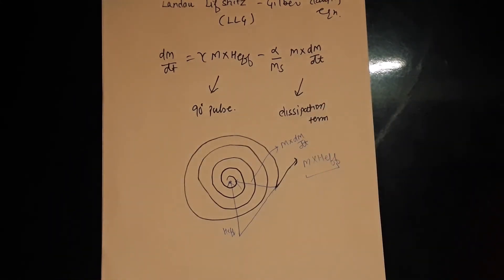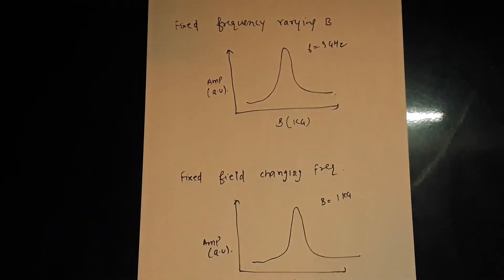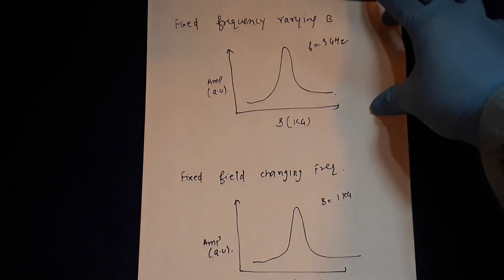FMR can be measured by two methods. One is the very conventional one in which they keep the microwave frequency constant, like equal to 9 gigahertz, and they vary the magnetic field. At some point of magnetic field the resonance occurs. That's what Kittel also did with this method only.